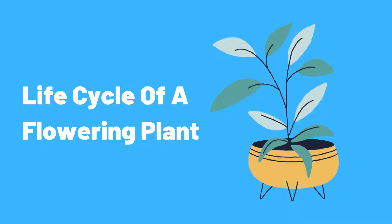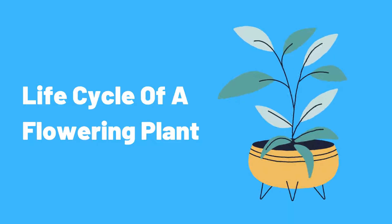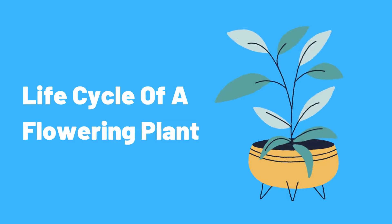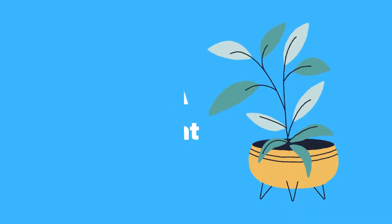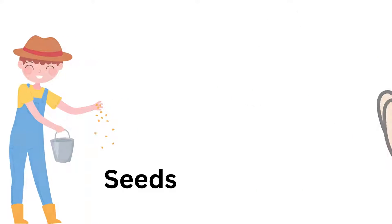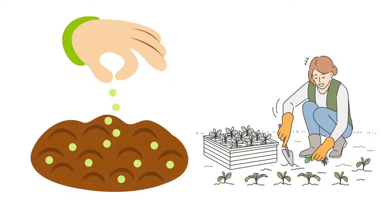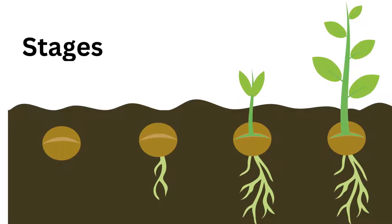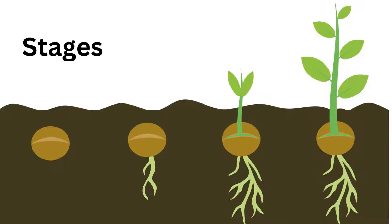The Life Cycle of a Flowering Plant. The life cycle of a flowering plant is a fascinating process that begins with a seed and ends with the production of new seeds. The process is divided into several stages, each with its own set of characteristics and functions.